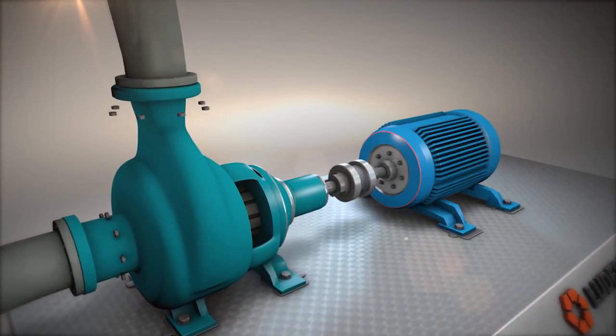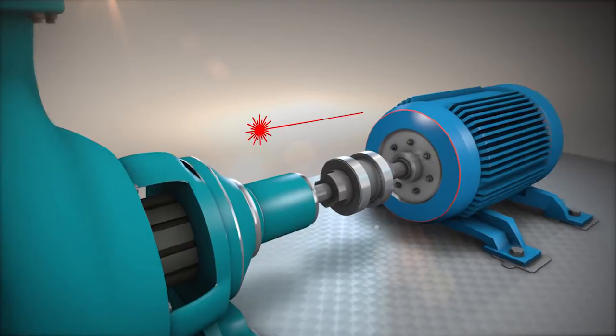It is important to check for pipe stress during pipe installation. A good laser alignment system can help you do this.